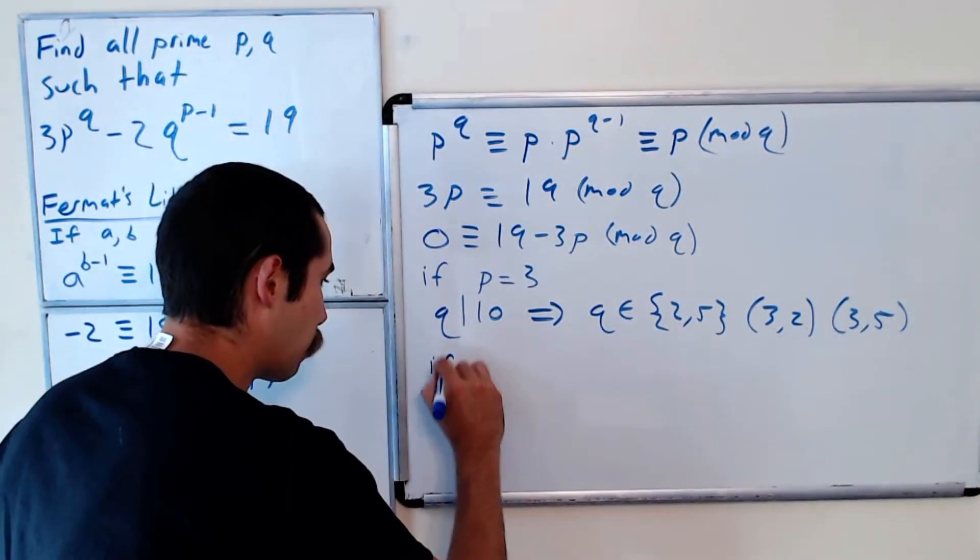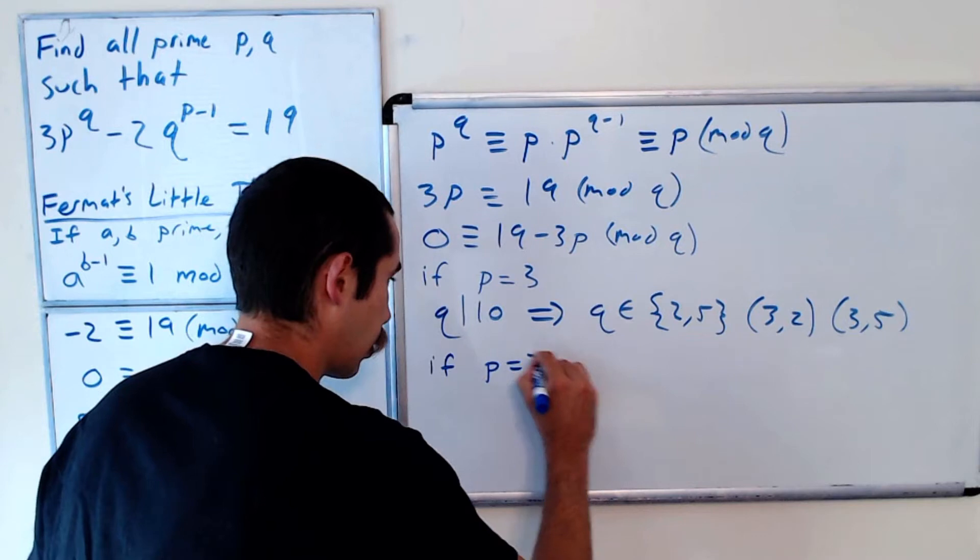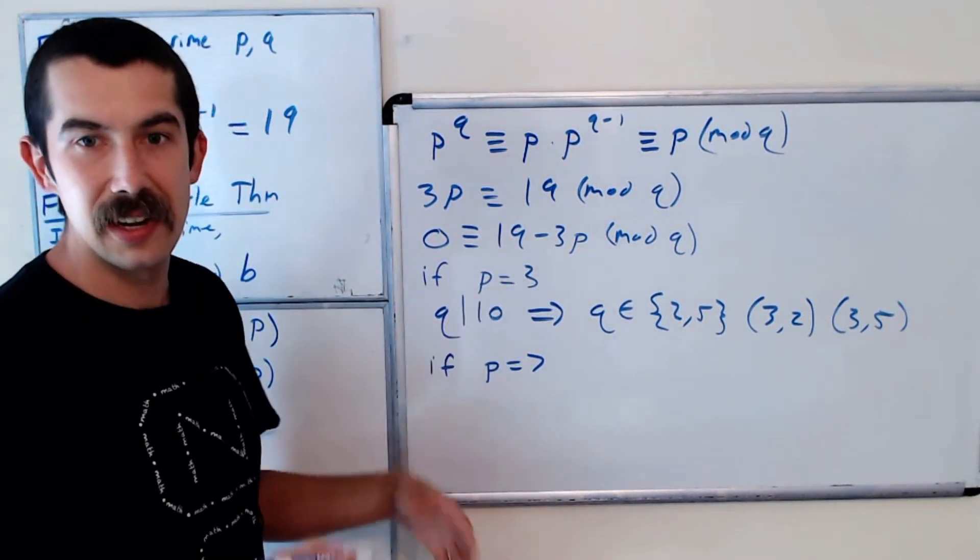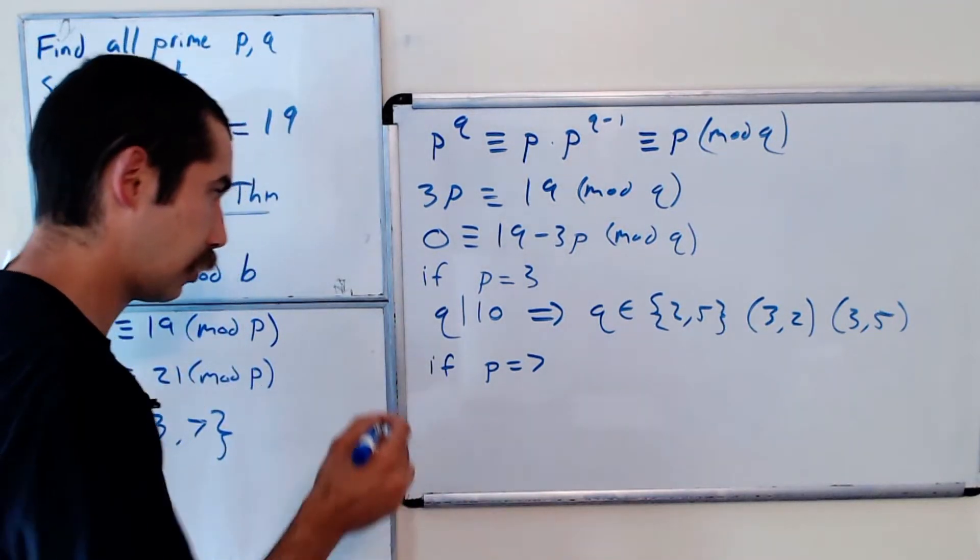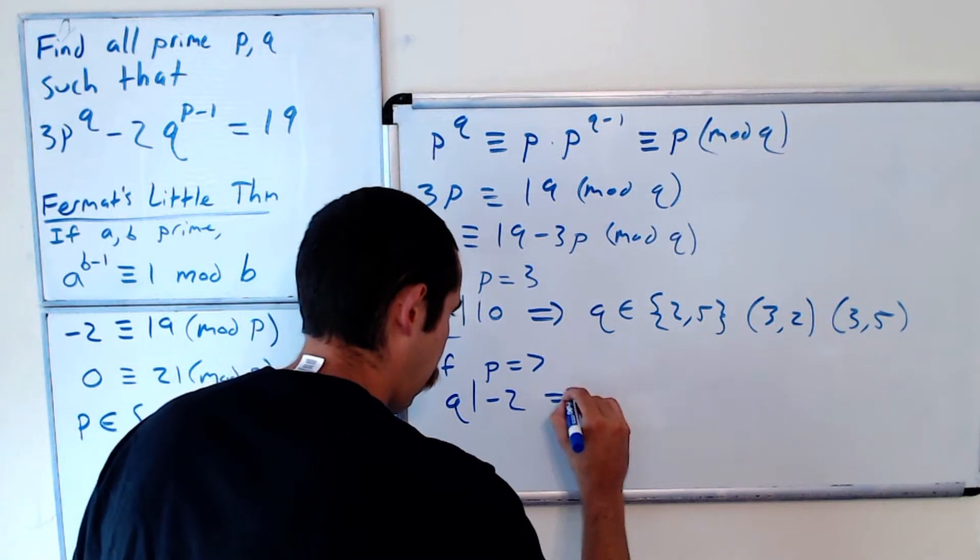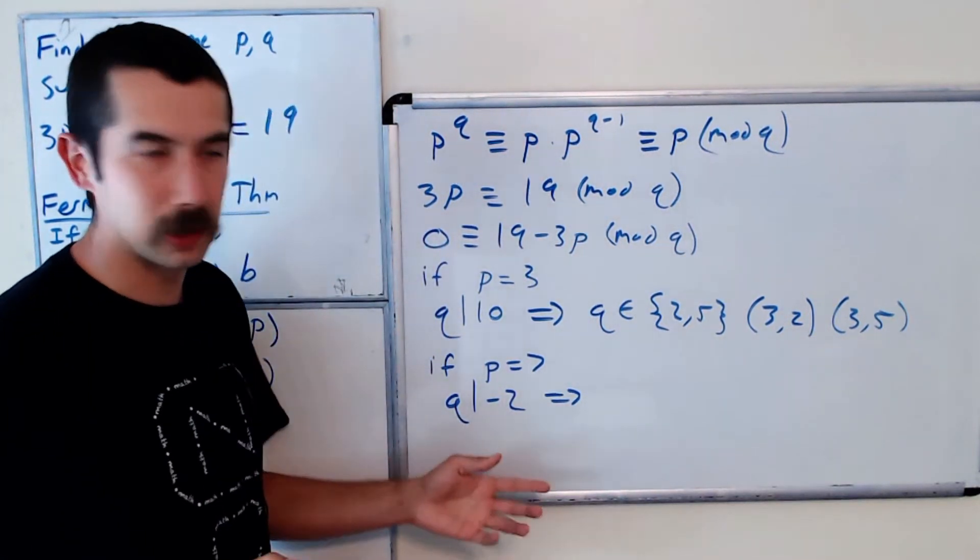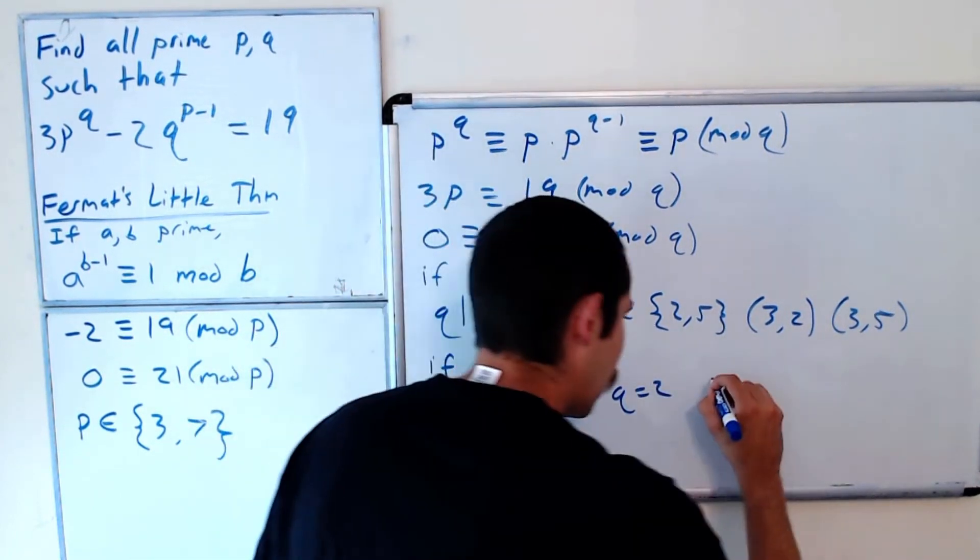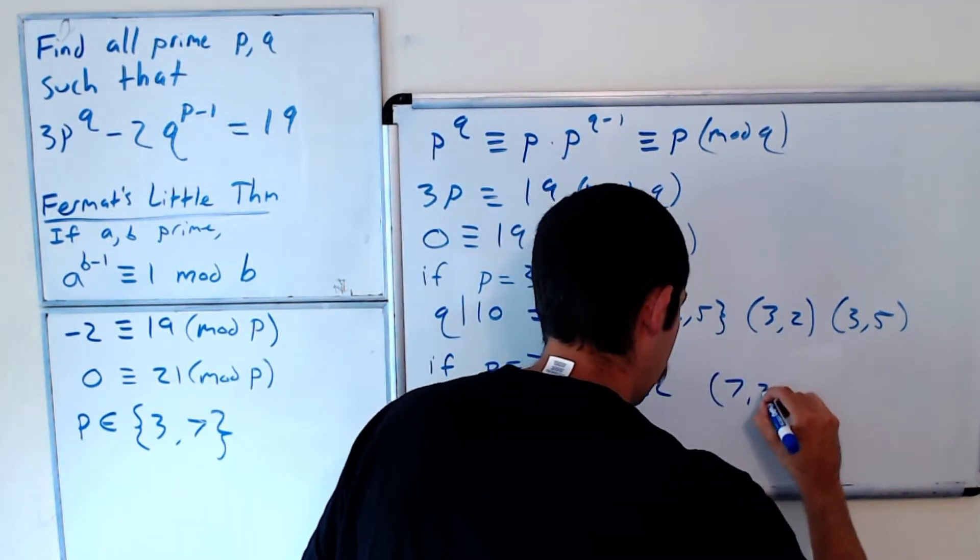And if p equals 7, then we have that q divides -2, which means that q is equal to 2. So we have another possible answer of (7,2).